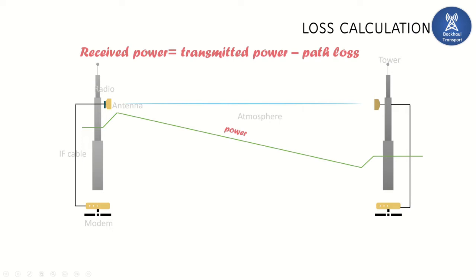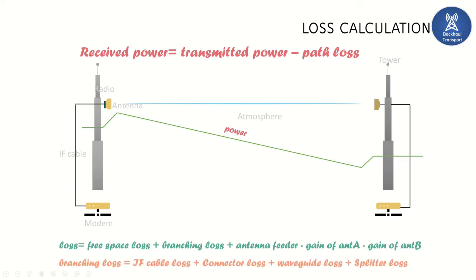Let's calculate the losses here. The losses we are summing up are the free space losses, branching losses, and antenna feeder losses, and then we are subtracting it from the gain of the antenna at the A end and the B end. We have seen a term called branching losses. What is it? Branching losses is a summation of many losses, that is IF cable losses, connector losses, waveguide losses, and if we use splitter then we will calculate the splitter losses also.